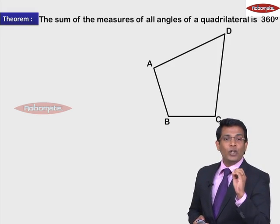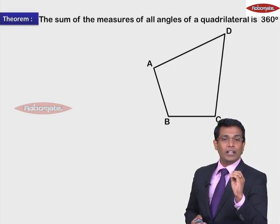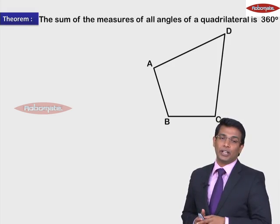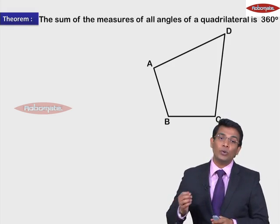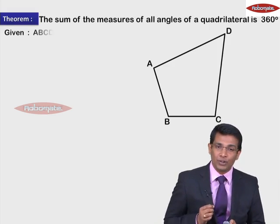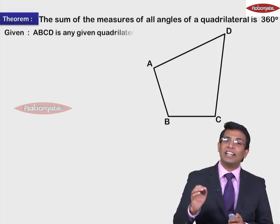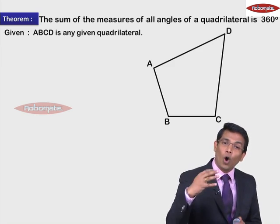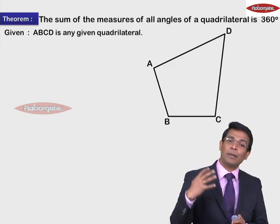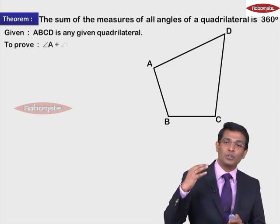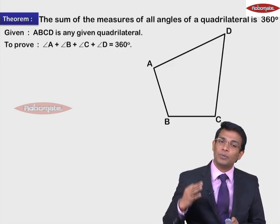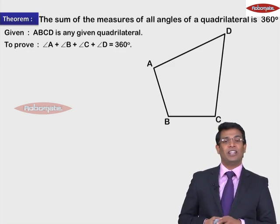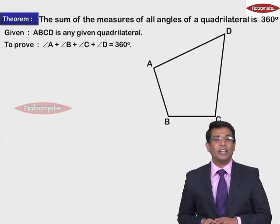We need to prove that the sum of all angles of this quadrilateral is 360 degrees. But before that you need to write the Given. So in the Given we'll mention: ABCD is any quadrilateral. And you need to prove that all angles sum up — that means I need to prove: measure of angle A + measure of angle B + measure of angle C + measure of angle D = 360 degrees.